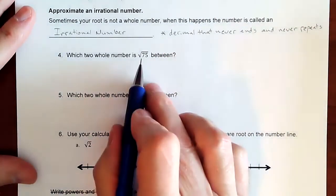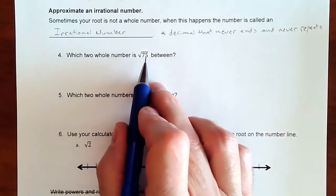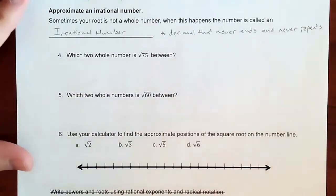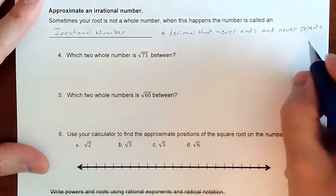So square root of 75. 75 is not a perfect square. We will get a decimal that never ends. So I would like to approximate that without using a calculator. So what I'm going to do is off to the side, I'm going to list out some of our perfect squares.